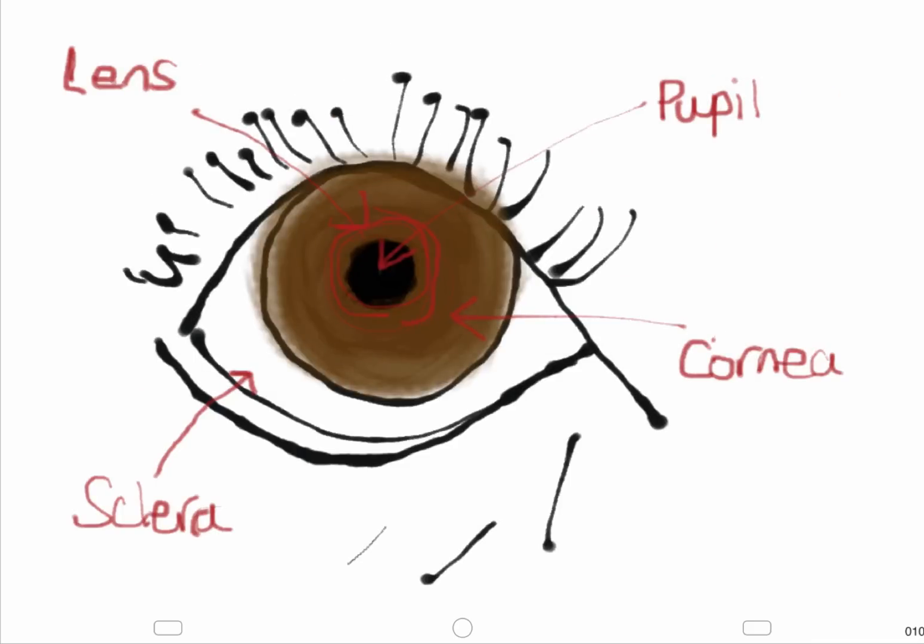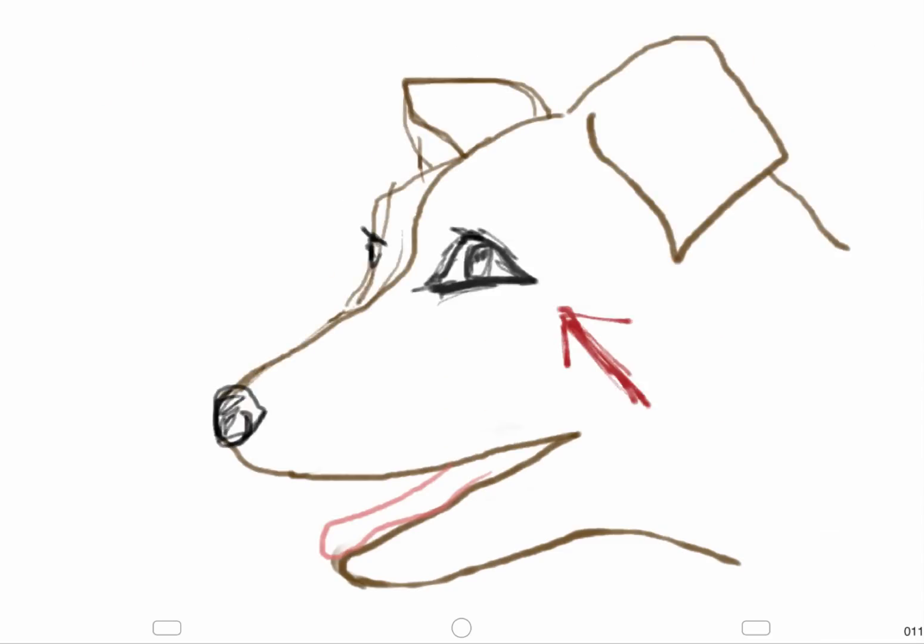The sclera and cornea should be smooth with no ulceration. The pupils should be examined to be symmetrical and of appropriate size. The lens should be observed for changes in opacity and density. The anterior chamber can be observed for any material by looking side on and through the chamber.